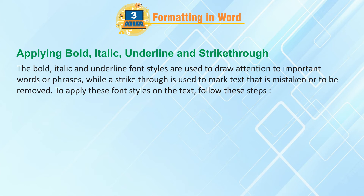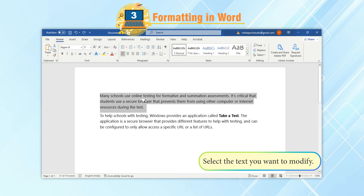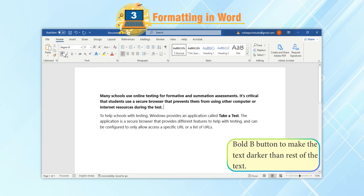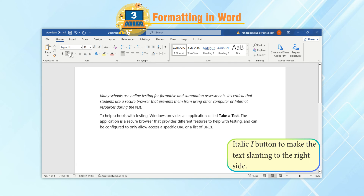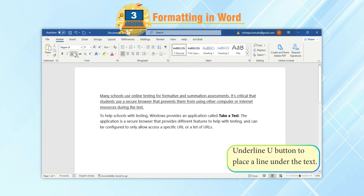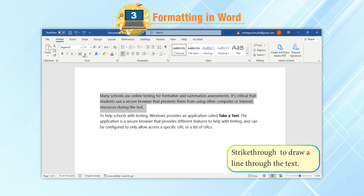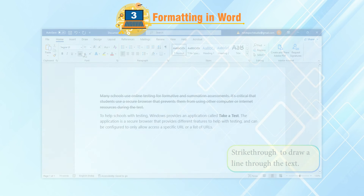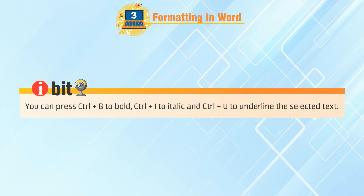To apply these font styles on the text, follow these steps: Select the text you want to modify. On the Home tab, click on the Bold button to make the text darker than the rest of the text; the Italic button to make the text slant to the right side; the Underline button to place a line under the text; or Strikethrough to draw a line through the text. Tip: You can press Ctrl+B to bold, Ctrl+I to italic, and Ctrl+U to underline the selected text.